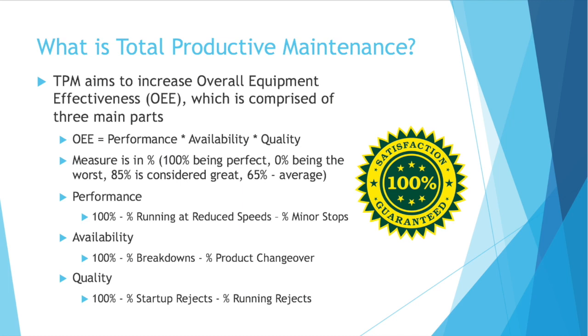Your availability, again, starts at 100%. Then you subtract your percent of the time you're broken down — the machine's not available if it's broken down. Then you subtract your percent product changeover.